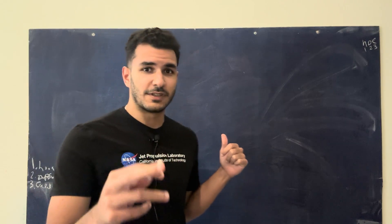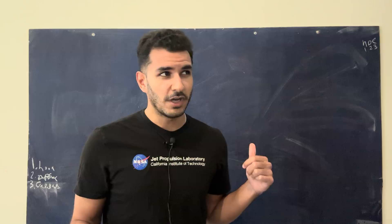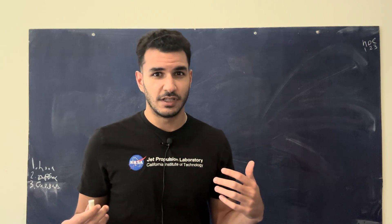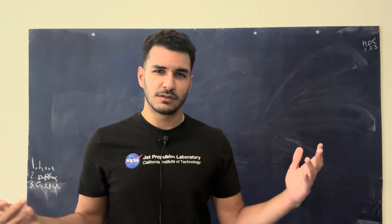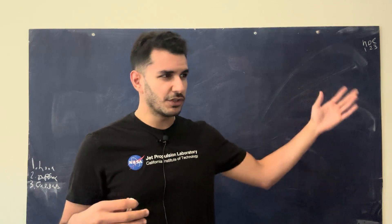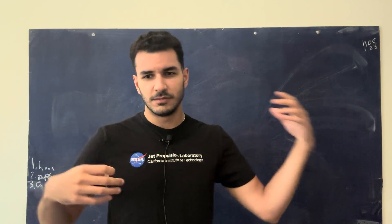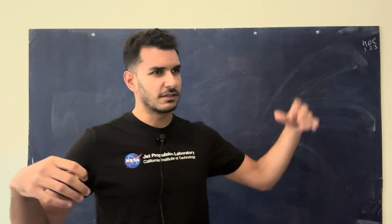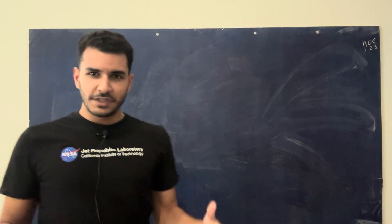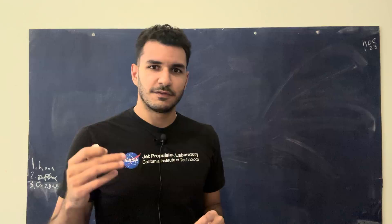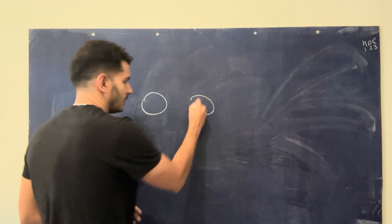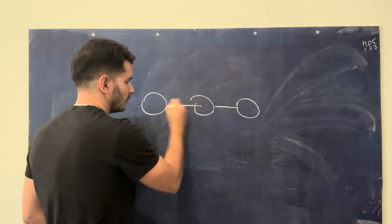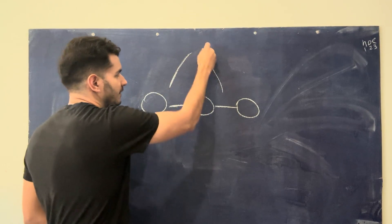But before I explain to you what systems engineering is, we probably should backtrack and understand what even is a system. What is a system, right? And you hear that word all the time, right? Like there's a communication system, there's a nervous system, there's like system this, system that, control system. What is a system? Well, at the very fundamental level, a system is just a bunch of components working together to achieve some type of goal.